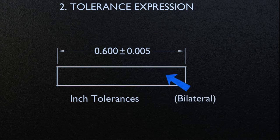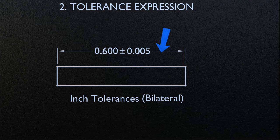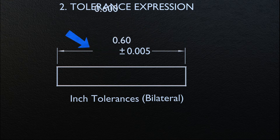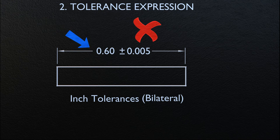For bilateral tolerancing with inch dimensions, both the plus and minus values and the dimension must have the same number of decimal places, as seen on the screen. If the decimal places of the nominal value differ from the tolerances, it is not good practice. Note: where basic dimensions are used, associated tolerances contain the number of decimal places necessary for control. There is no requirement for the basic dimension value to be expressed with the same number of decimal places as the tolerance.